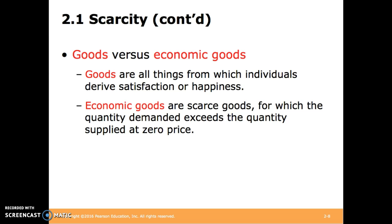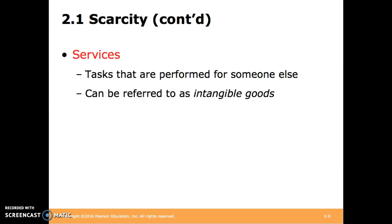Goods versus economic goods. Goods are all things from which individuals derive satisfaction or happiness. Economic goods are scarce goods for which the quantity demanded exceeds the quantity supplied at zero price — that is, if they were being given away for free, there wouldn't be enough to satisfy all that people would want. Services are tasks that are performed for someone else. They can be referred to as intangible goods. You can think of this like the haircut that you get from a barber, or a chef preparing your meal at a restaurant.